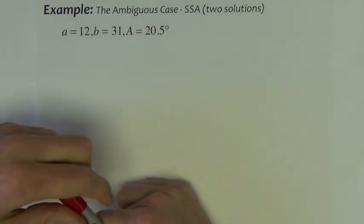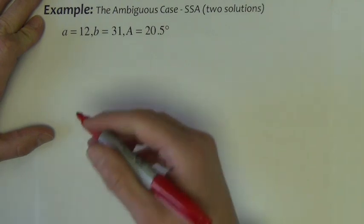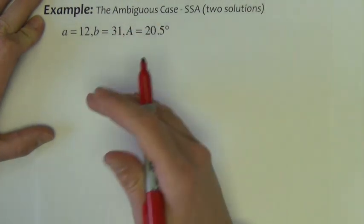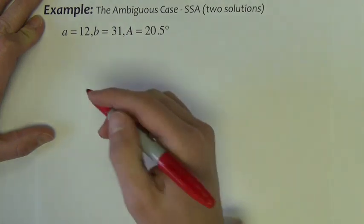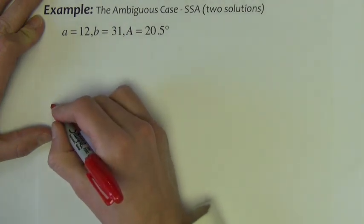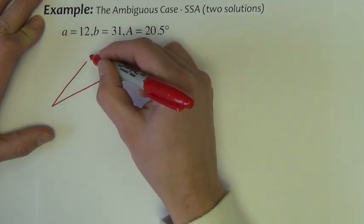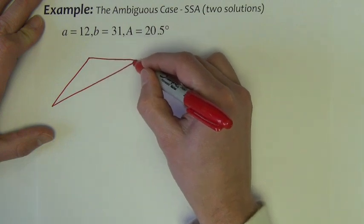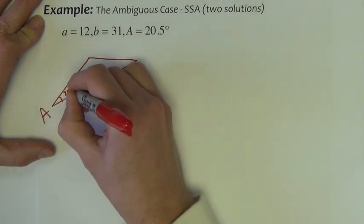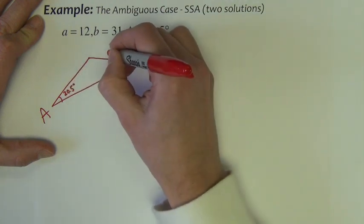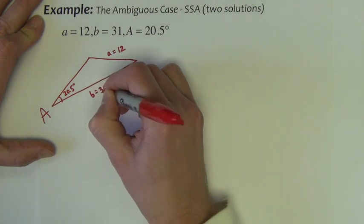Next let's look at this side-side-angle ambiguous two solution case. Again, we can draw a picture. You might be finding that after you've done a lot of these that the pictures really aren't necessary. But if you like to see a picture, then go ahead and draw a picture. Draw it as close to scale as you want. Maybe here's a, it's 20.5 degrees. Here's little a, that's 12. Maybe this is little b, that's 31.